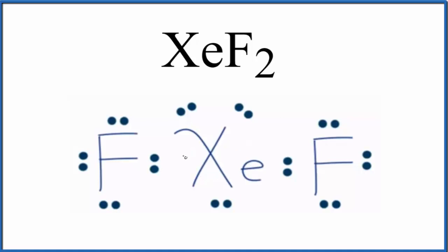For bonding pairs of electrons, we're looking at the bonds. These are the electron pairs between atoms. We have one pair here and another pair here. So we have two bonding pairs of electrons.